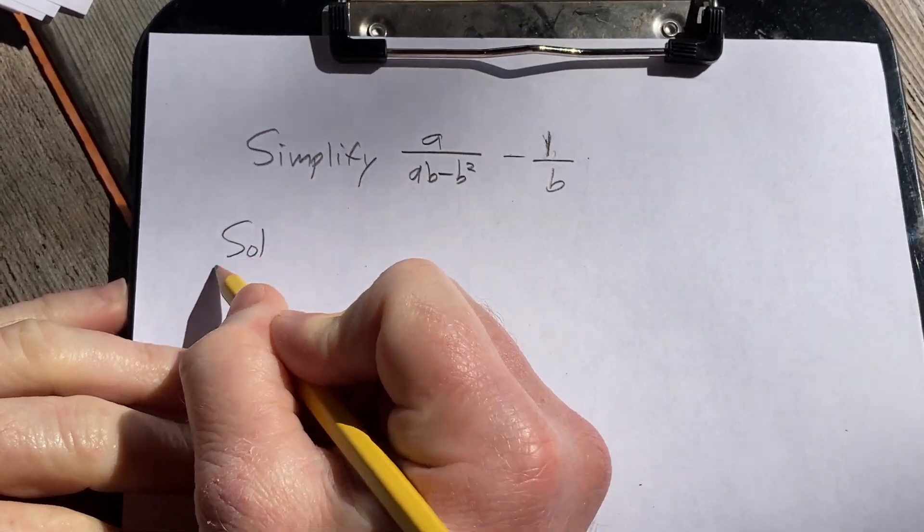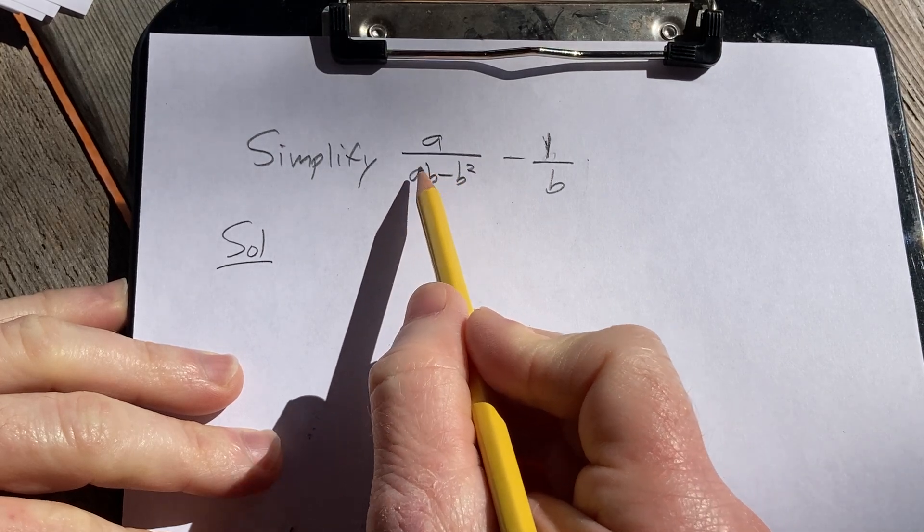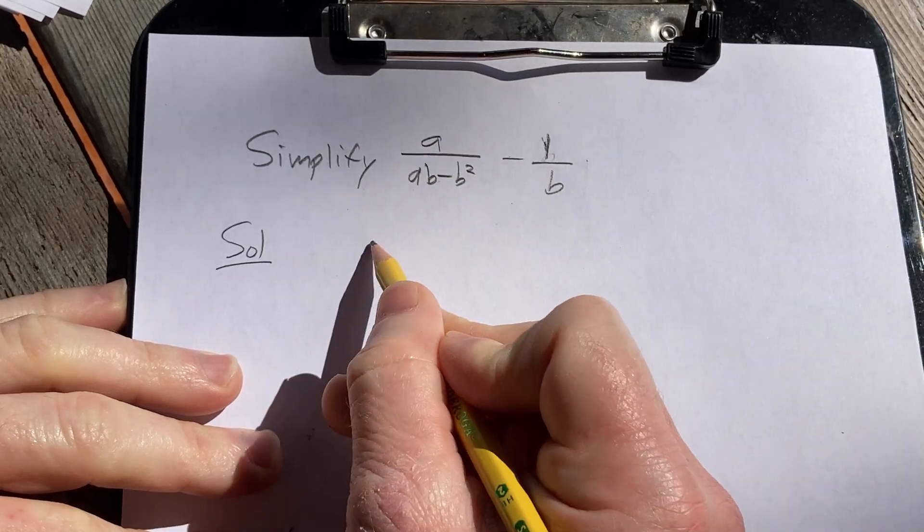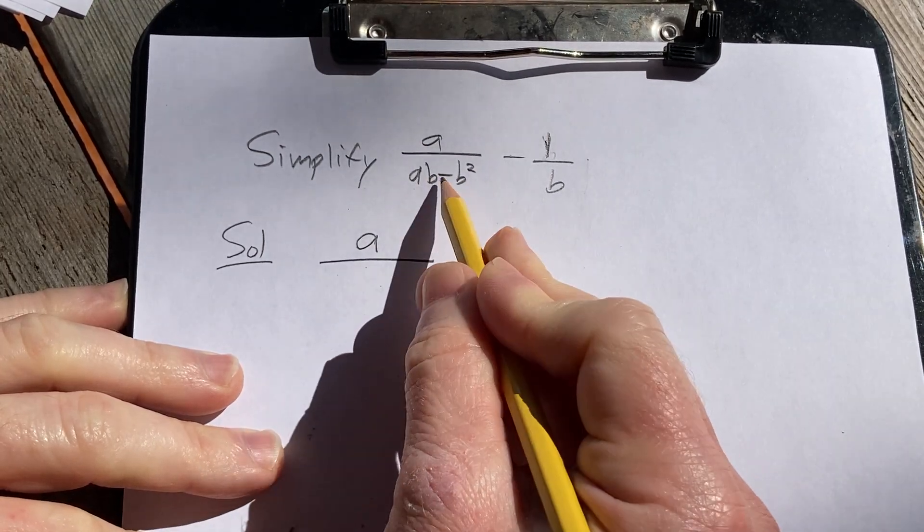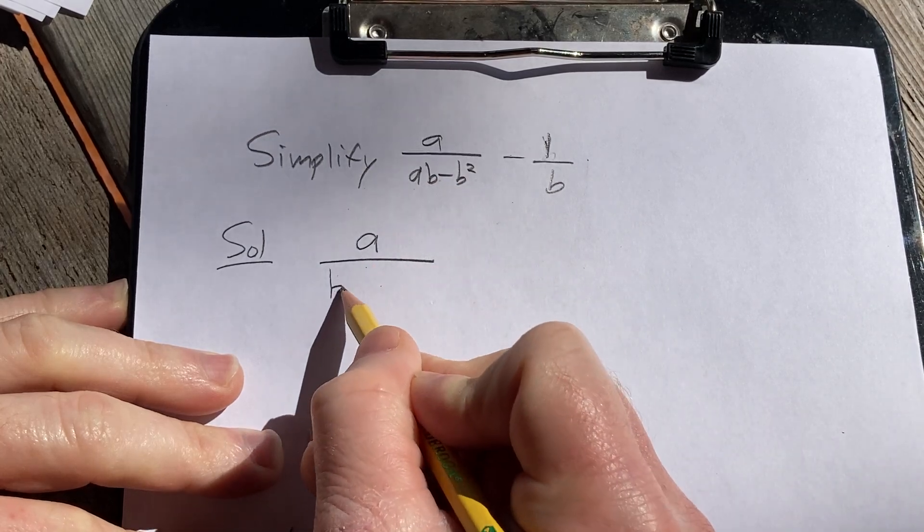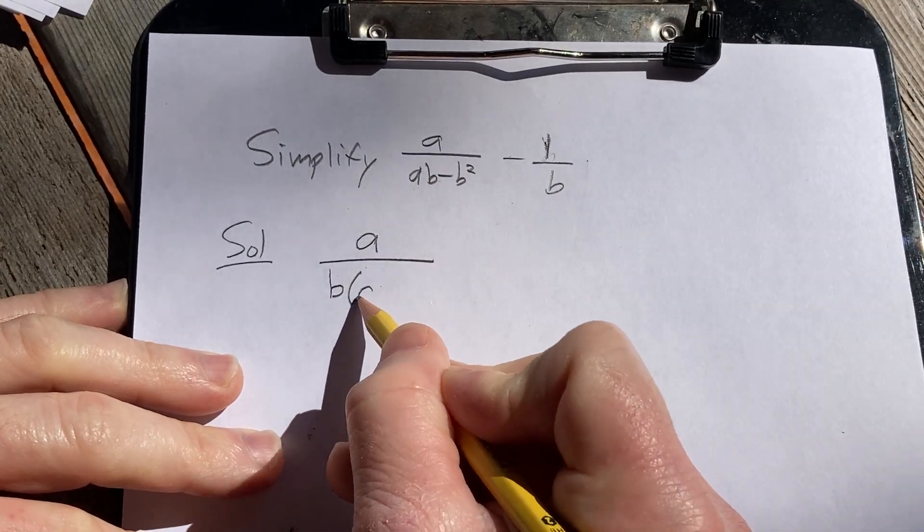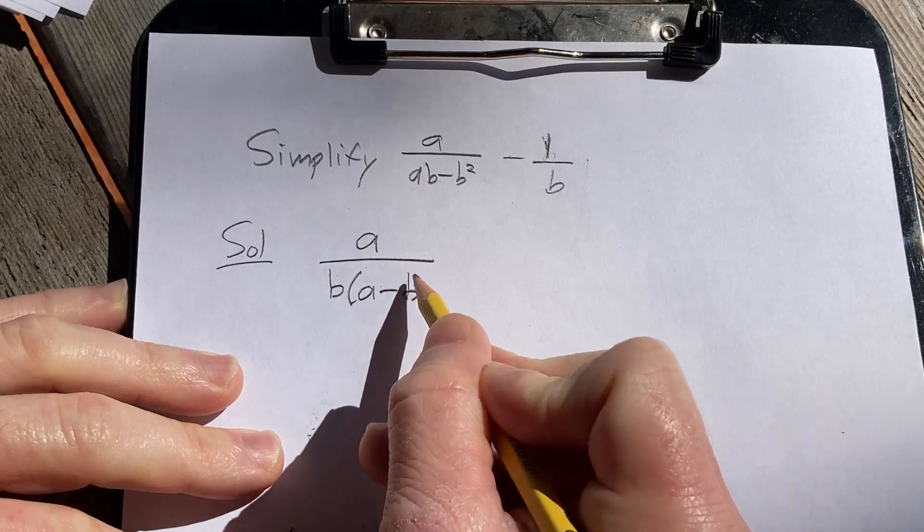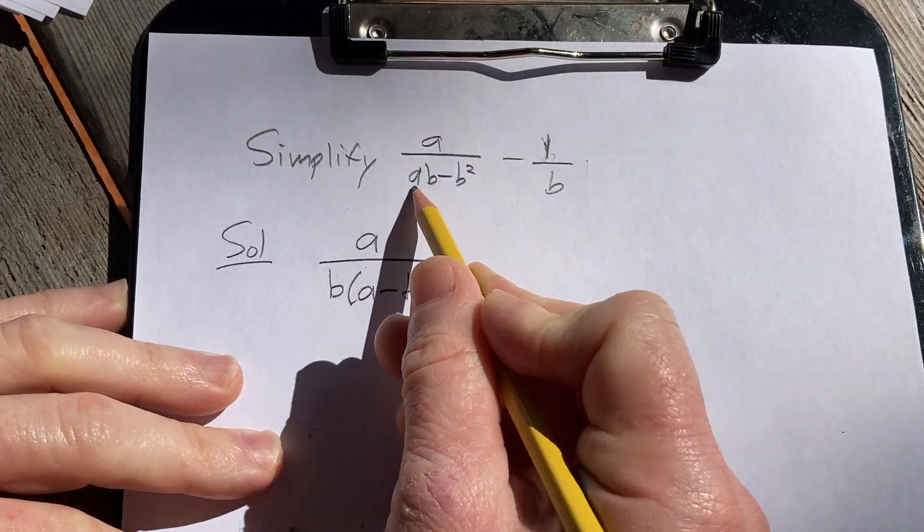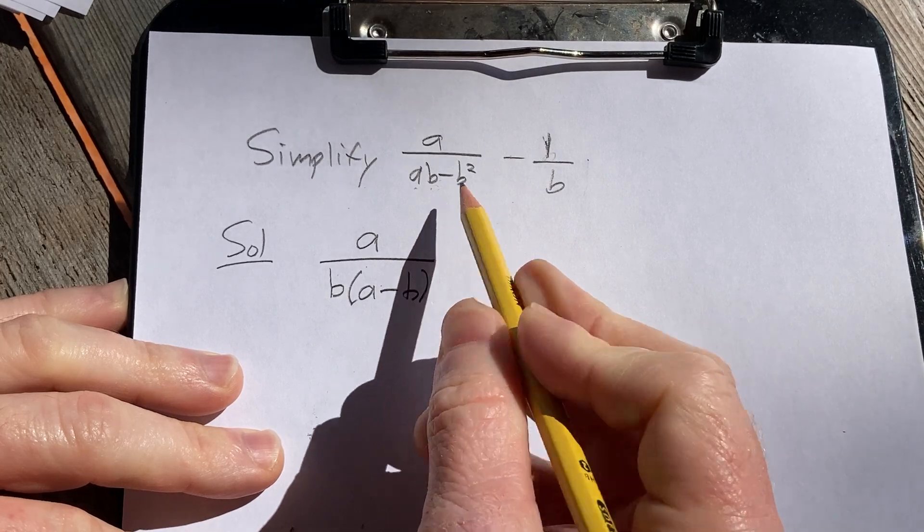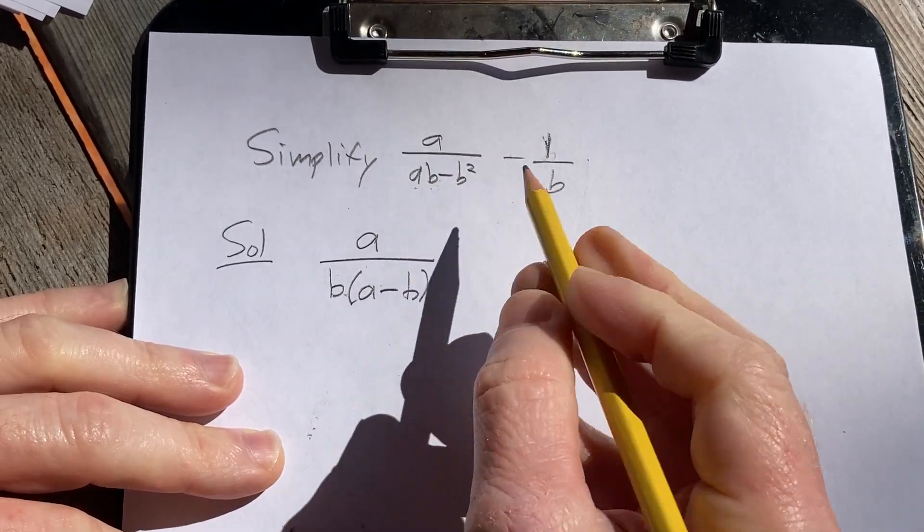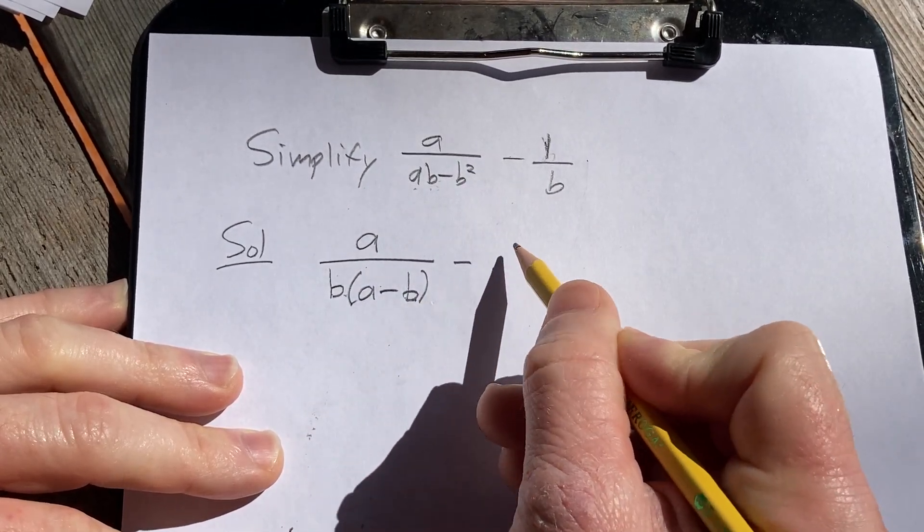Solution. First thing we're going to do is rewrite this because we can simplify this piece here. So this is a over, and we can factor out a b. So we have b times parentheses a minus b. We check that: b times a is ba, which is the same thing as ab because multiplication is commutative, and b times b is b squared, so all is good there. Minus 1 over b.